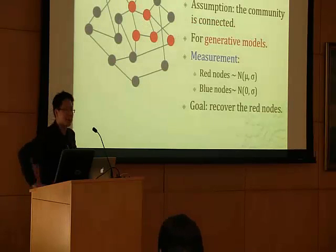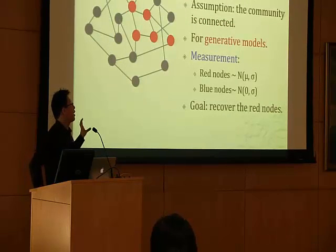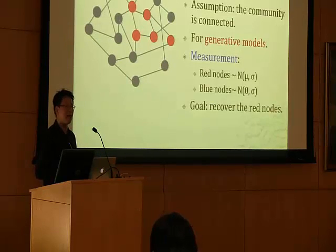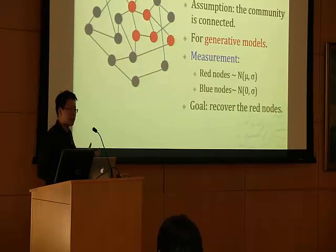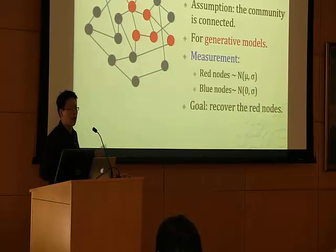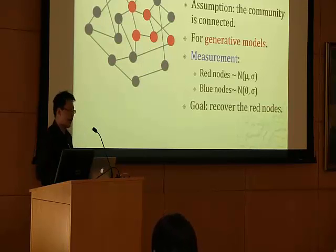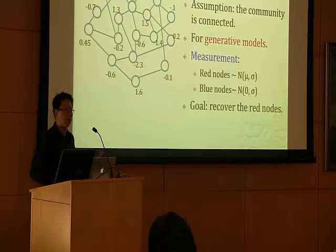Here is the model we propose. We think the graph is generated from a random stochastic process, such as an Erdős–Rényi random graph or the Kleinberg small-world graph. After we observe the graph, a subset of special nodes is selected as the community we want to detect — shown as the red nodes in the graph. Each node is also associated with a signal sampled from a Gaussian distribution. If the node is a red node, the signal comes from a positive-mean Gaussian; otherwise, it comes from a zero-mean Gaussian. We are given these numbers together with the graph, and our goal is to recover the set of red nodes.